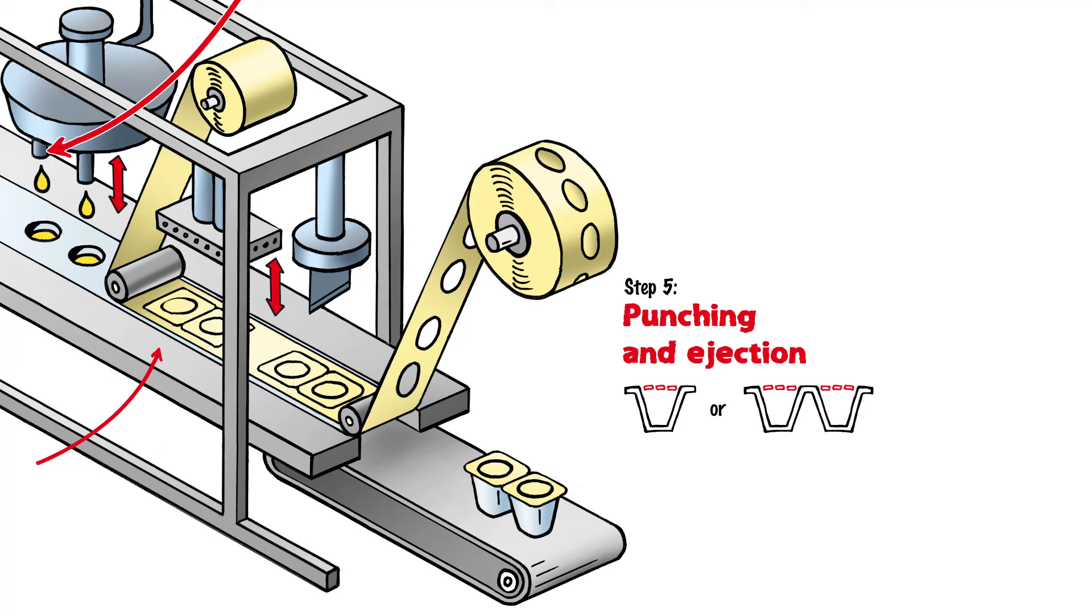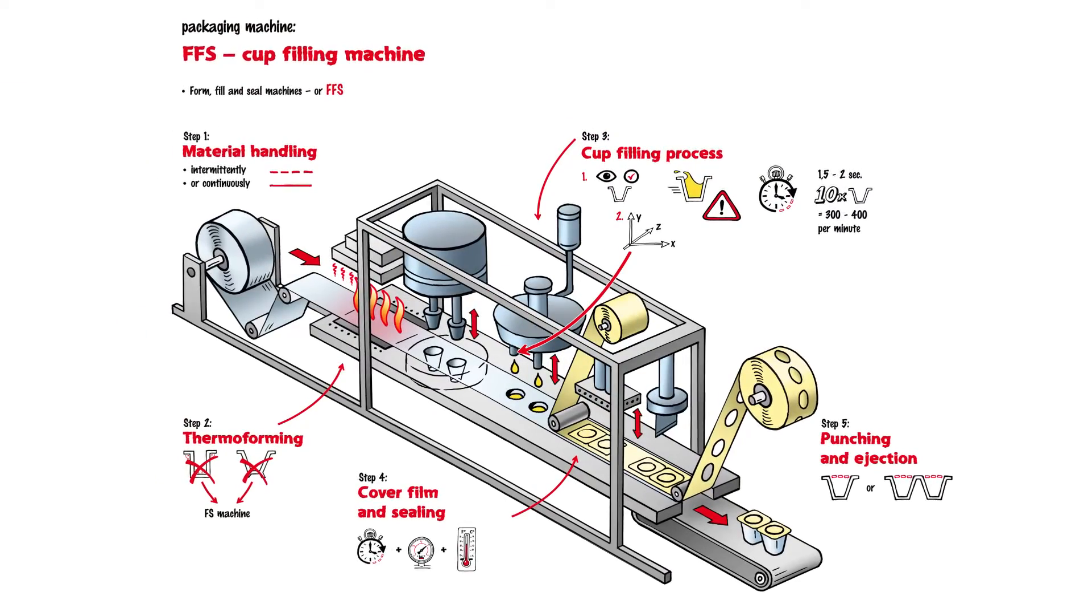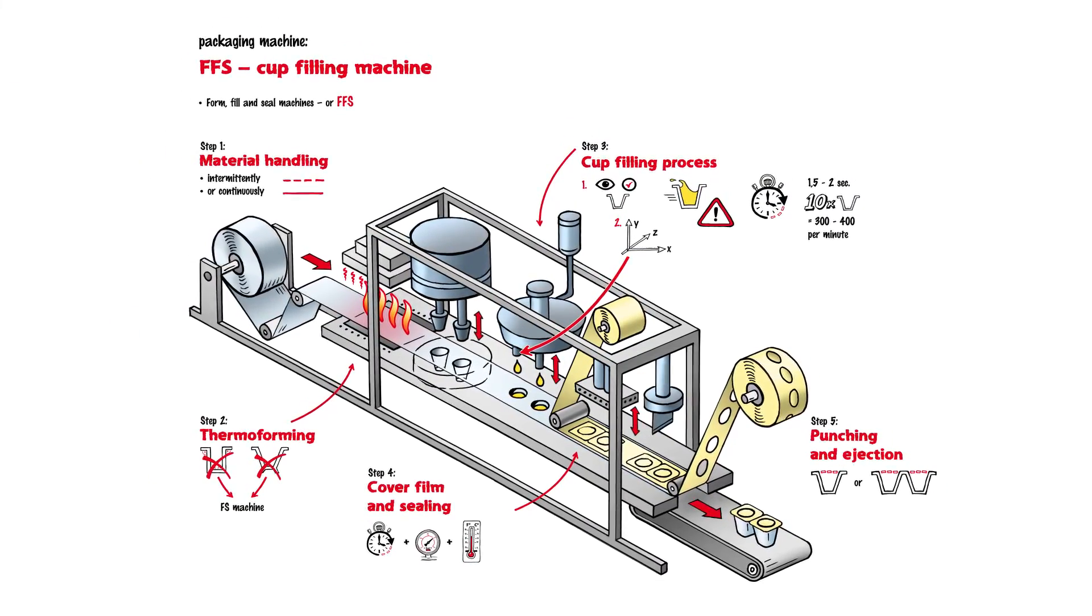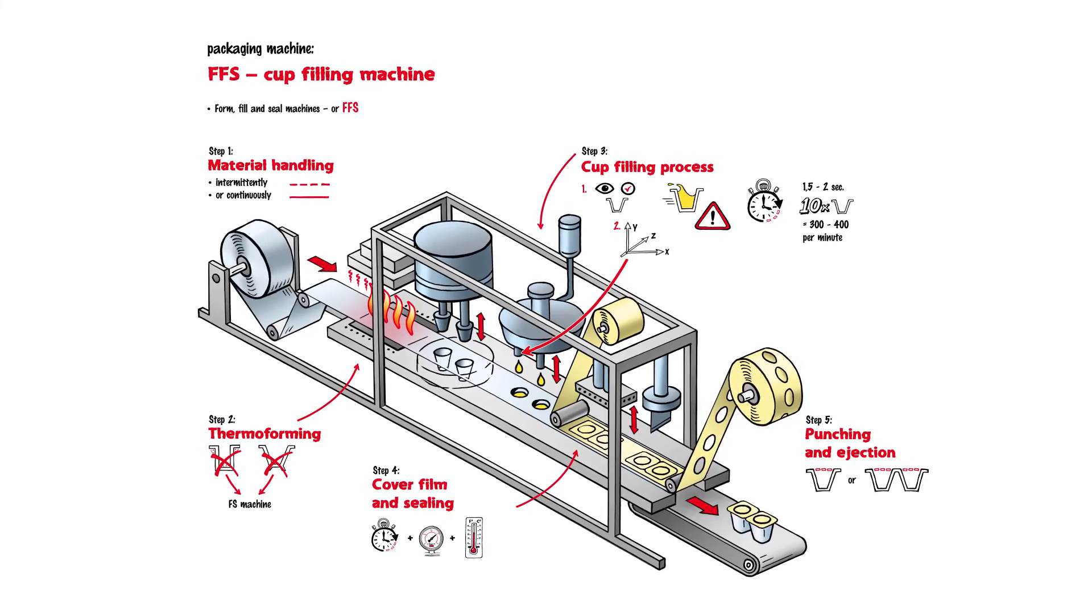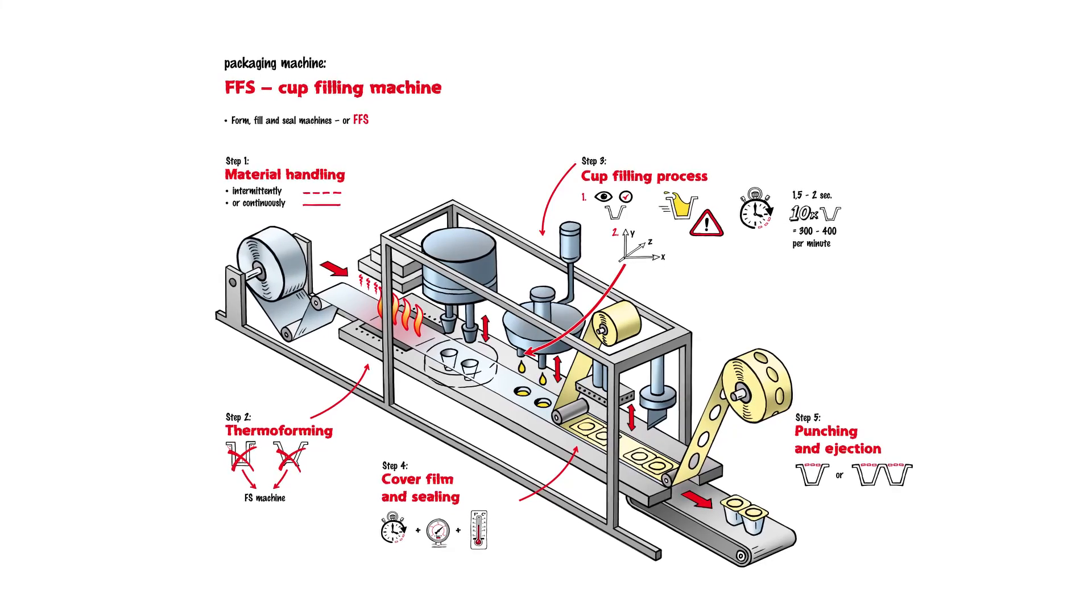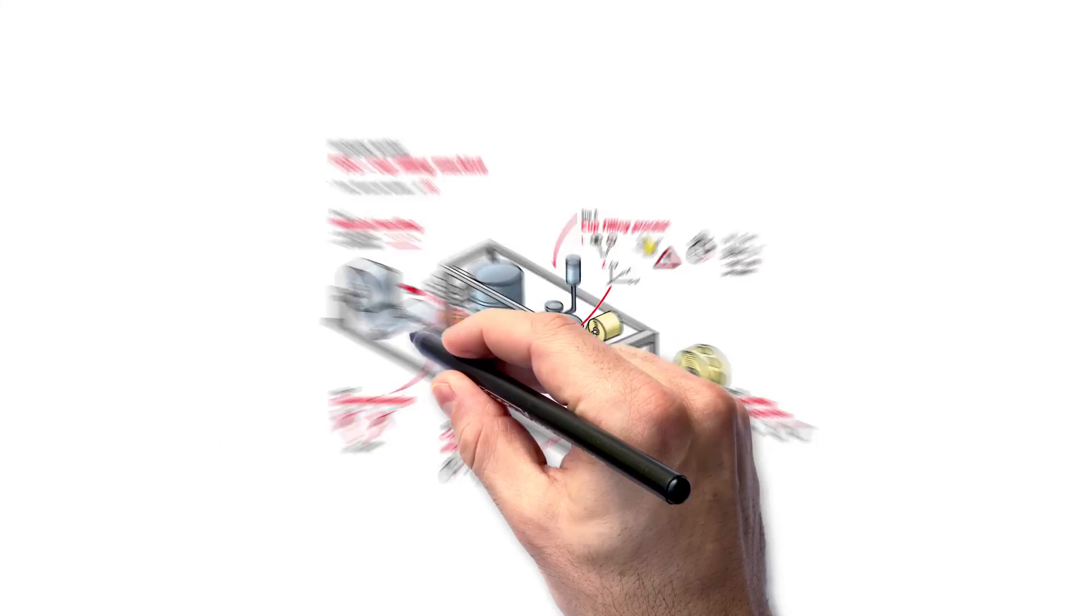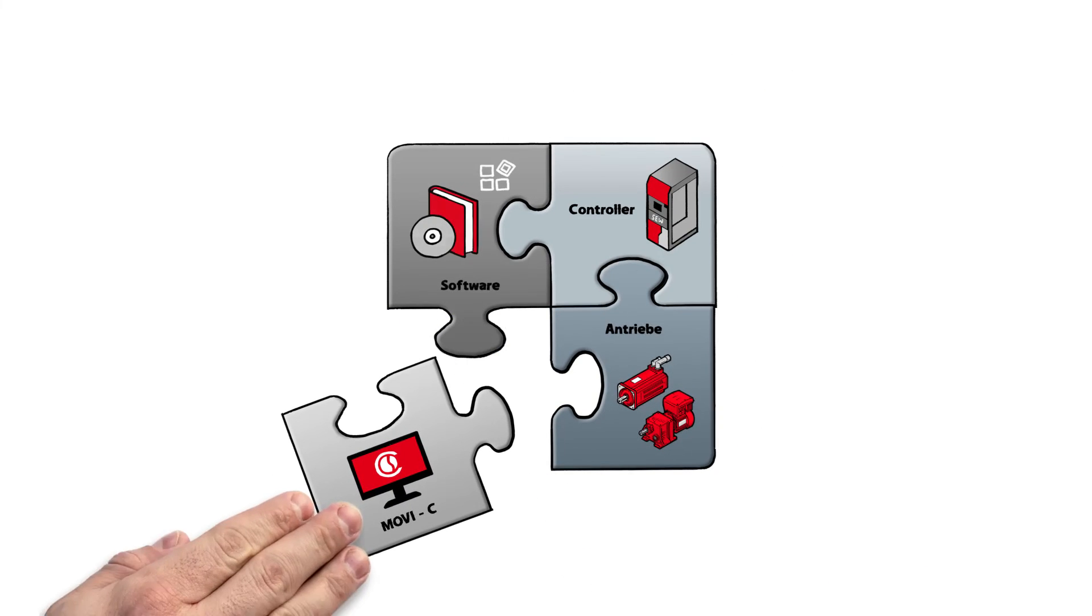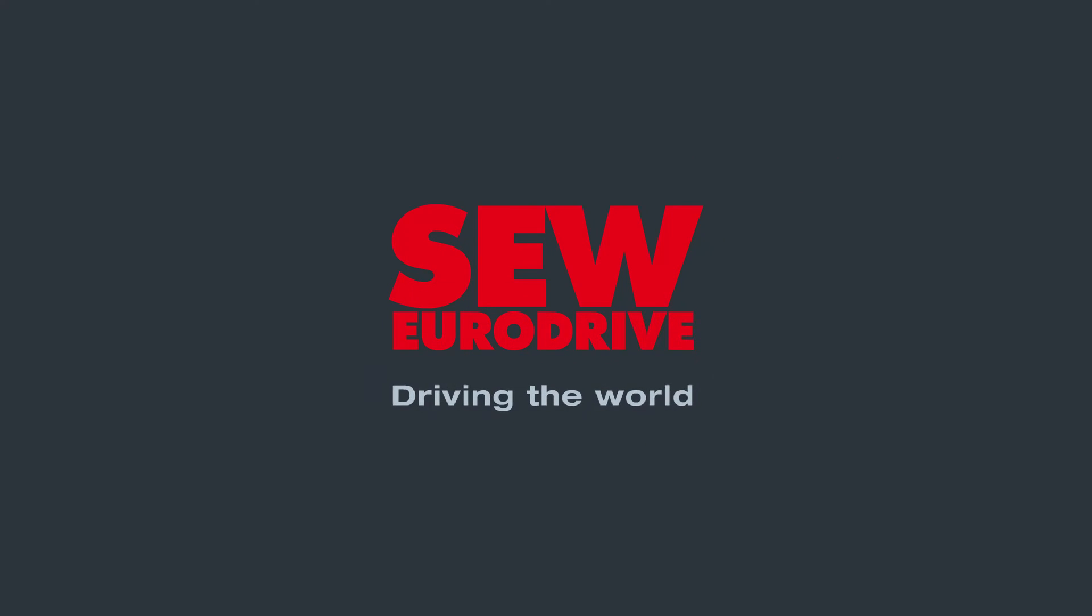Step 6: Conveyor belts or pickers are then used to transport the finished cup packaging to the next station. For SEW EuroDrive, these process steps mean the automation of a wide range of motion tasks. Regardless of whether the drive technology is used for unwinding, thermoforming, cup filling, or sealing and punching processes, SEW EuroDrive offers the corresponding solution in terms of both hardware and software.